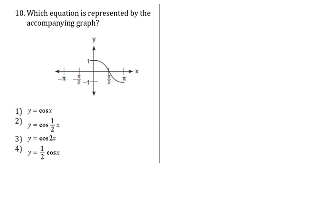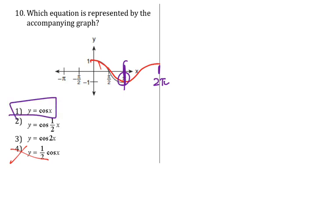Number 10: we need to find the equation of the graph. Notice we're going up and down by one, so the coefficient is one — that rules out choice 4. This is a cosine curve. Sketching it, the halfway point is at π and then we reach 2π. Within 2π we only have one cycle, so our answer is choice 1: cosine of x, with a coefficient of 1 in front of x.